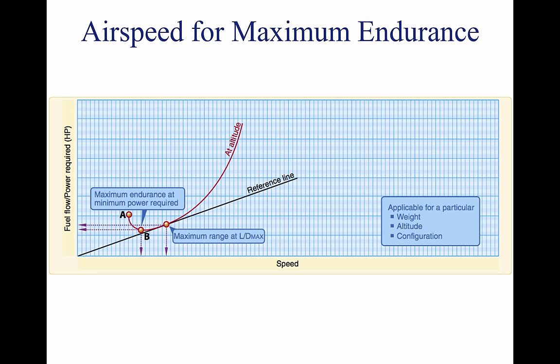Range performance. The ability of an aircraft to convert fuel energy into flying distance is one of the most important items of aircraft performance. In flying operations, the problem of efficient range operation appears in two general forms: one, to extract the maximum flying distance from a given fuel load; and two, to fly a specified distance with a minimum expenditure of fuel. A common element for each is the specific range — nautical miles of flying distance versus the amount of fuel consumed. Range must be clearly distinguished from endurance. Range involves consideration of flying distance, while endurance involves consideration of flying time.